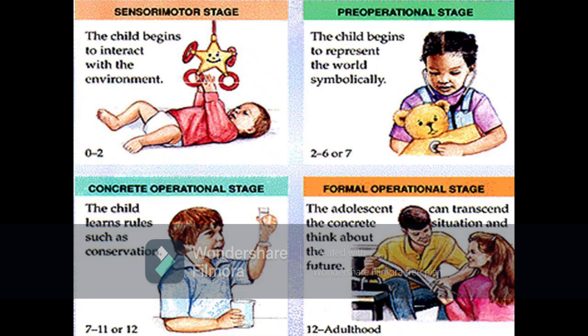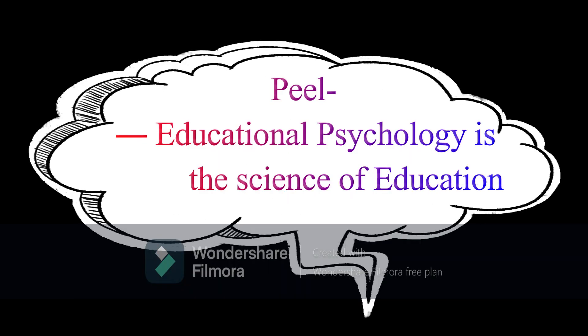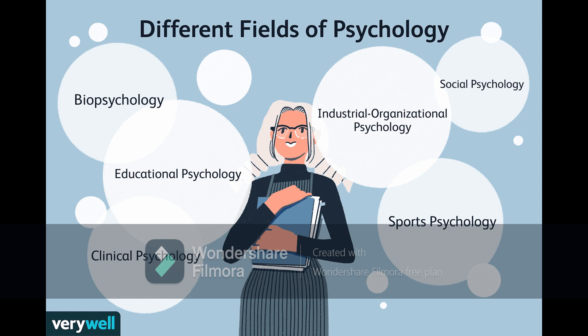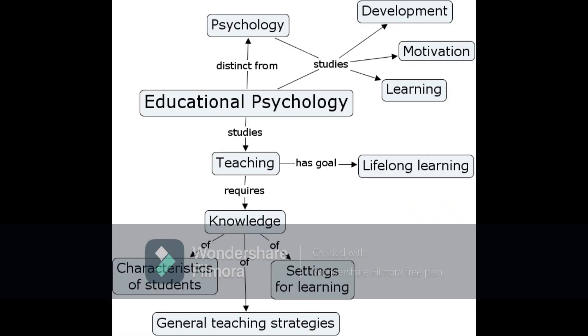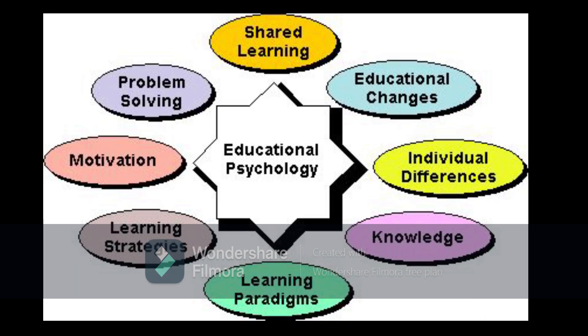According to Jude, educational psychology is the science which explains the changes that take place in individuals as they pass through the various stages of development. According to Peel, educational psychology is one of the branches of applied psychology concerned with the application of the principles, techniques and other resources of psychology to the solution of the problems confronting the teacher attempting to direct the growth of children toward defined objectives.